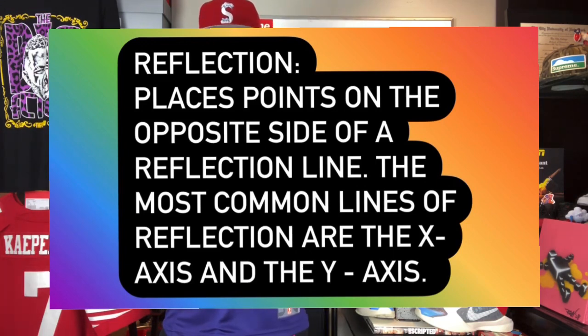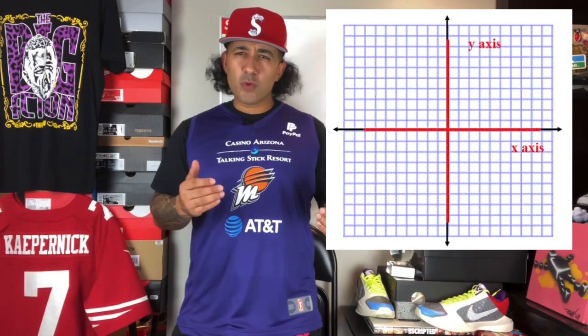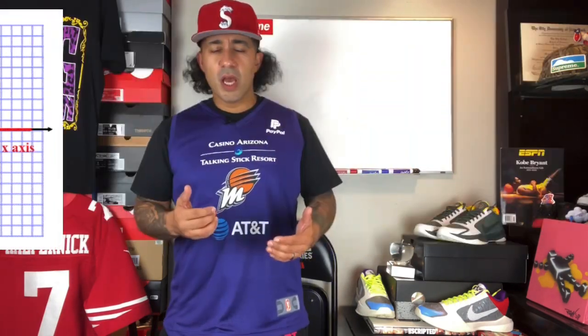The last type of transformation we're going to discuss today is a reflection. A reflection places points on the opposite side of a reflection line. Usually when we start talking about transformations, the reflection line is usually the x-axis or the y-axis, which you can see to my left right now. Just like you would look at your reflection in the mirror — anytime you do something in a mirror, it's reflecting, it's mimicking what you're doing, but on the opposite side. So the mirror image of the figure on the opposite side of the reflection line is a backwards copy of the original figure.